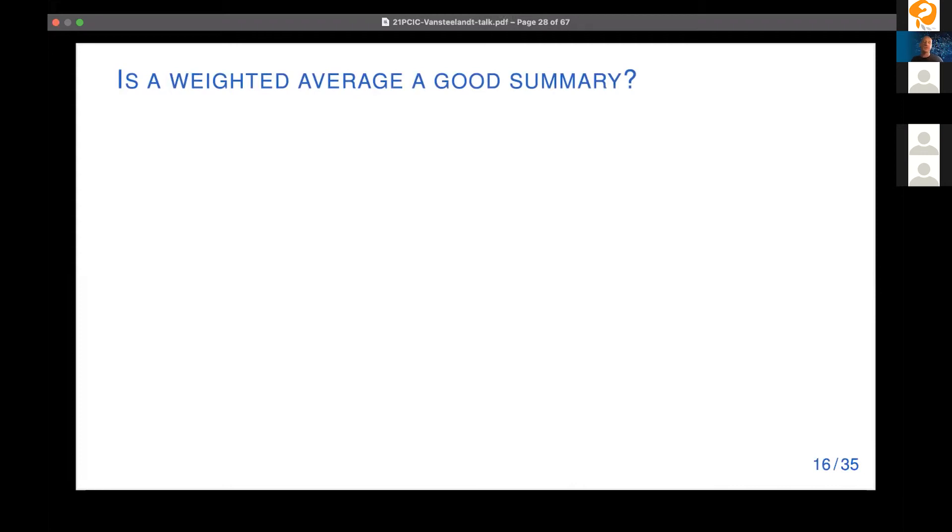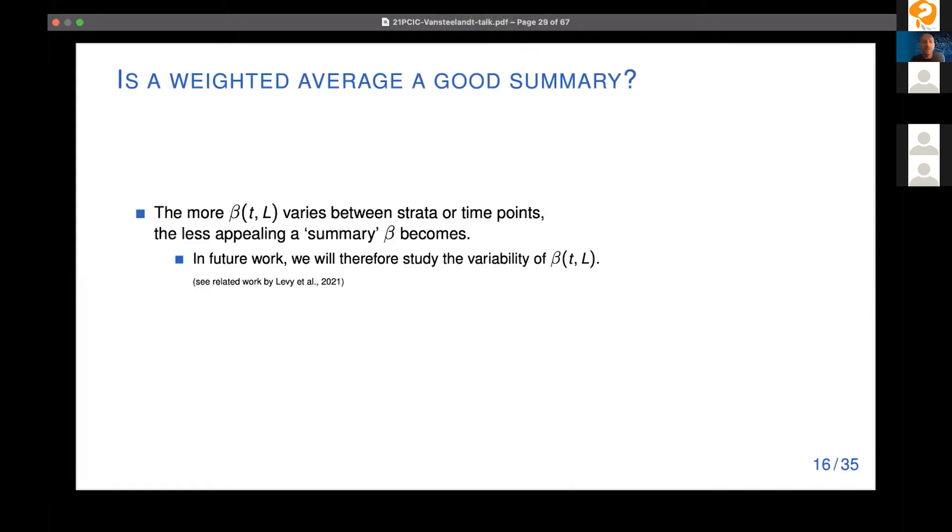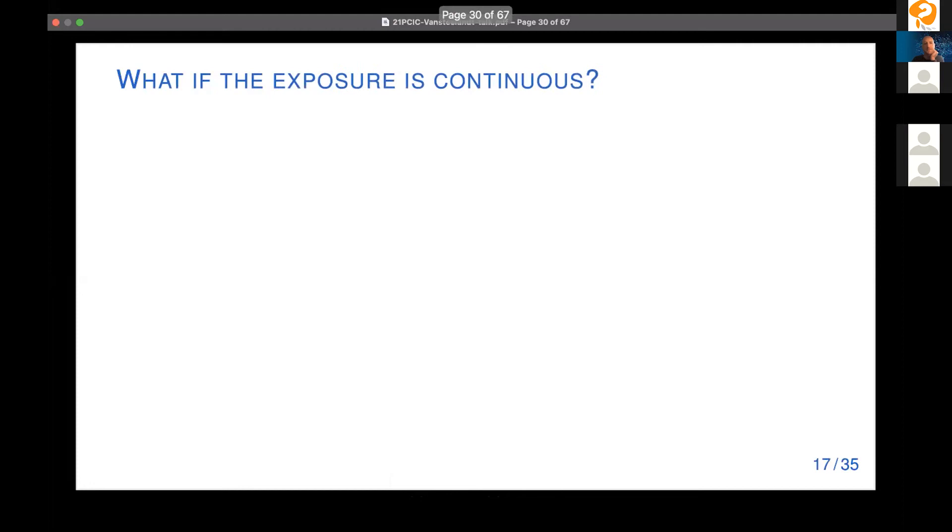Is a weighted average a good summary? Well, of course, the more beta of T and L varies between strata or time points, the less appealing a summary becomes. And this is why we are currently looking also into the variability over time points or covariate strata. If we learn that this variability is pretty small, then we can be pretty happy I would say by taking a summary.